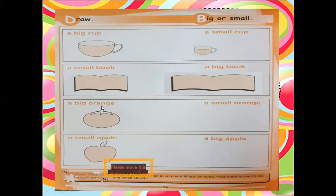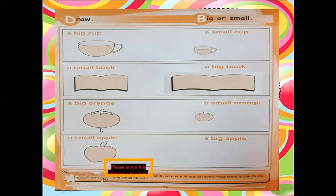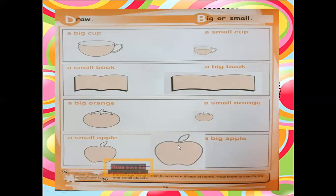A big orange is shown - what you will do is draw an orange that is smaller than the mentioned one. This is a small orange and this one is the big orange. In the last exercise, we have a small apple and you have to draw a big apple. The mentioned apple is small and you draw the big apple. It's easy and also interesting!